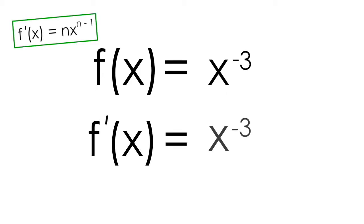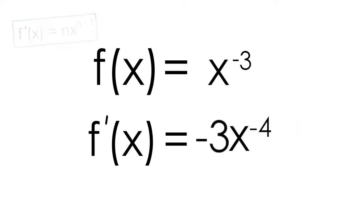The power rule says I can take the -3 in the exponent, bring it down in front of the x, and reduce the exponent by one. The result is -3x^(-4).